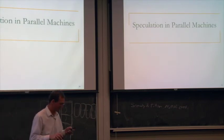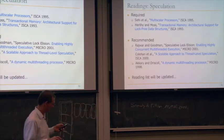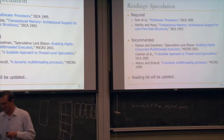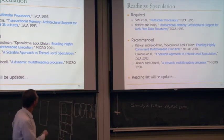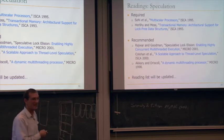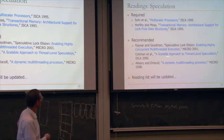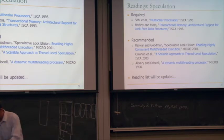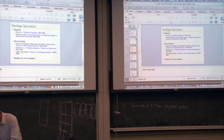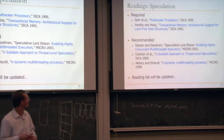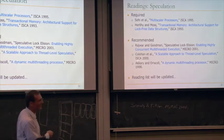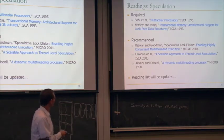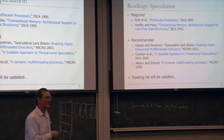We've been talking about speculation throughout, but we'll go even deeper into speculation now. There are some readings — you have two required ones: one on multi-scalar and the other on transactional memory. We've kind of covered the Collohan thread-level speculation paper, and we'll also cover speculative lock elision. We probably won't cover the dynamic multi-threading processor unless we have time for it.